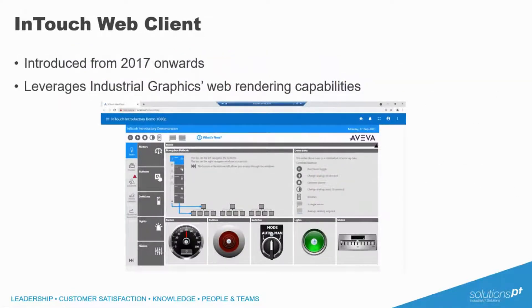Next up, we have the InTouch Web Client. This is InTouch's web platform that was introduced in 2017 Update 1, and what this does is leverages the native web rendering capabilities of the Industrial Graphics suite — which is formerly known as Orchestra Graphics, if you're more familiar with that phrase — to deliver a web view of your InTouch applications. You may have seen this back in the 2017 release and maybe passed over it at the time, since it was read-only and more designed for the casual user or to be used as, for example, a KPI dashboard on a large screen somewhere in view of staff to track important metrics.